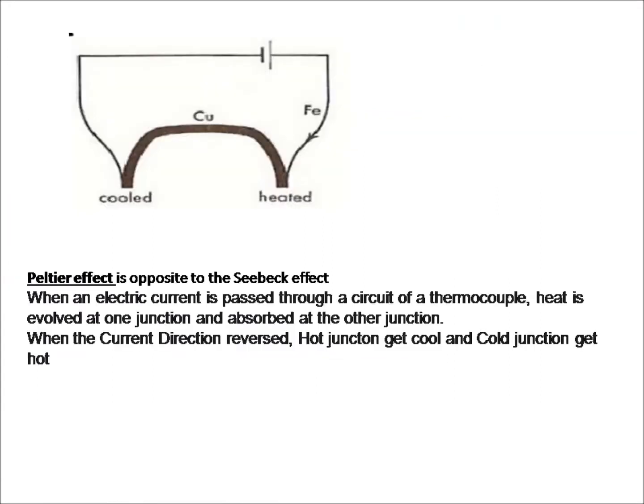The Peltier effect is opposite to the Seebeck effect. When an electric current is passed through a thermocouple circuit, heat is evolved at one junction and absorbed at the other. When the current direction is reversed, the hot junction becomes hot as current passes through two dissimilar metals such as copper and ferrous.